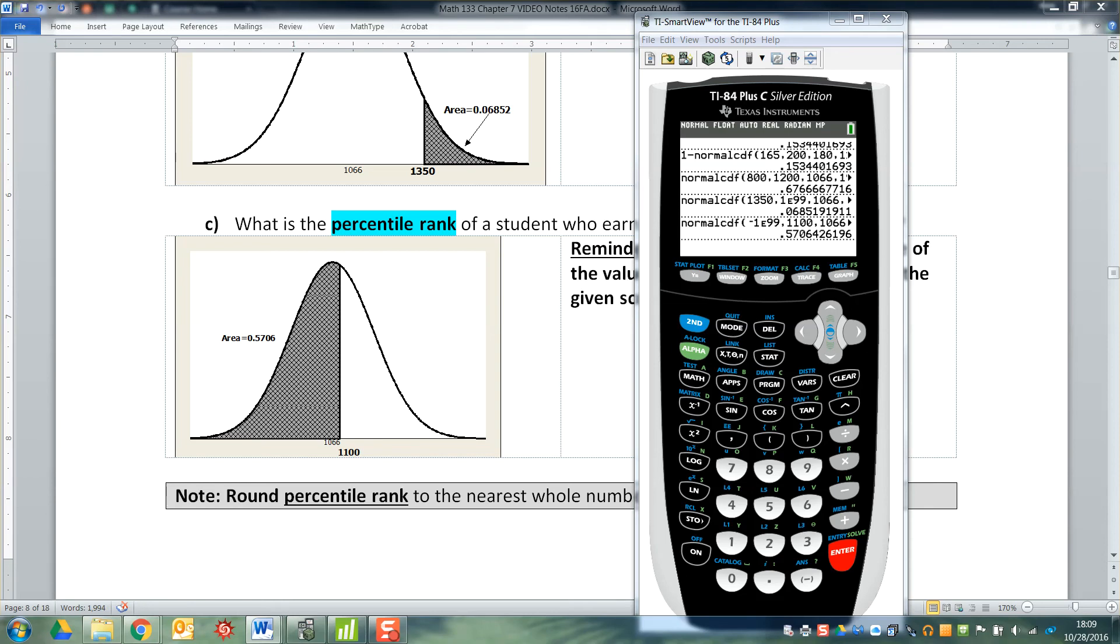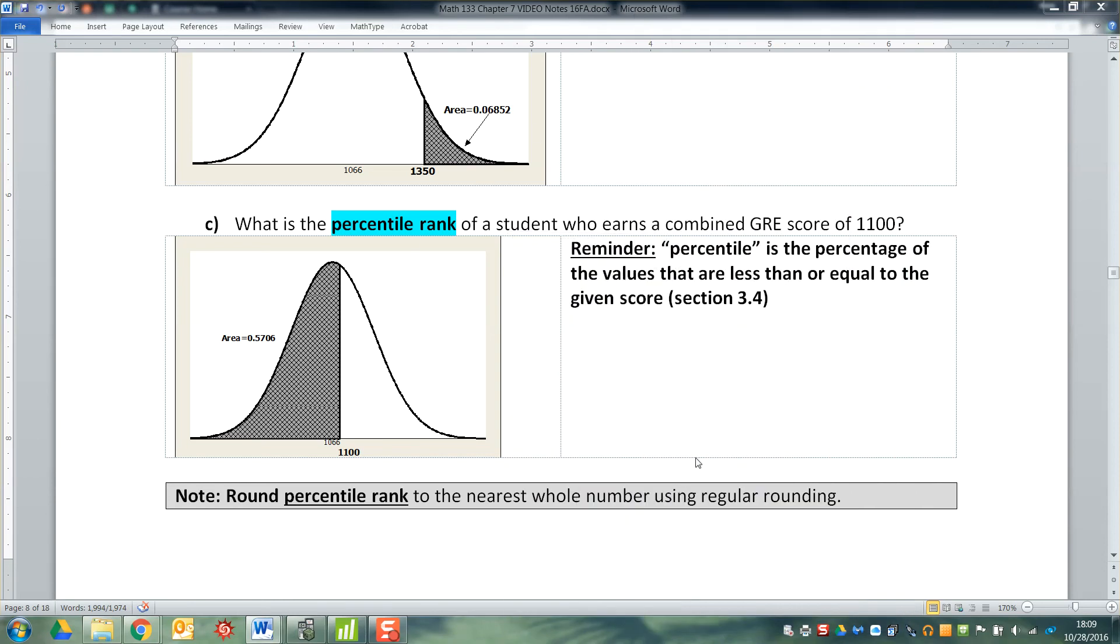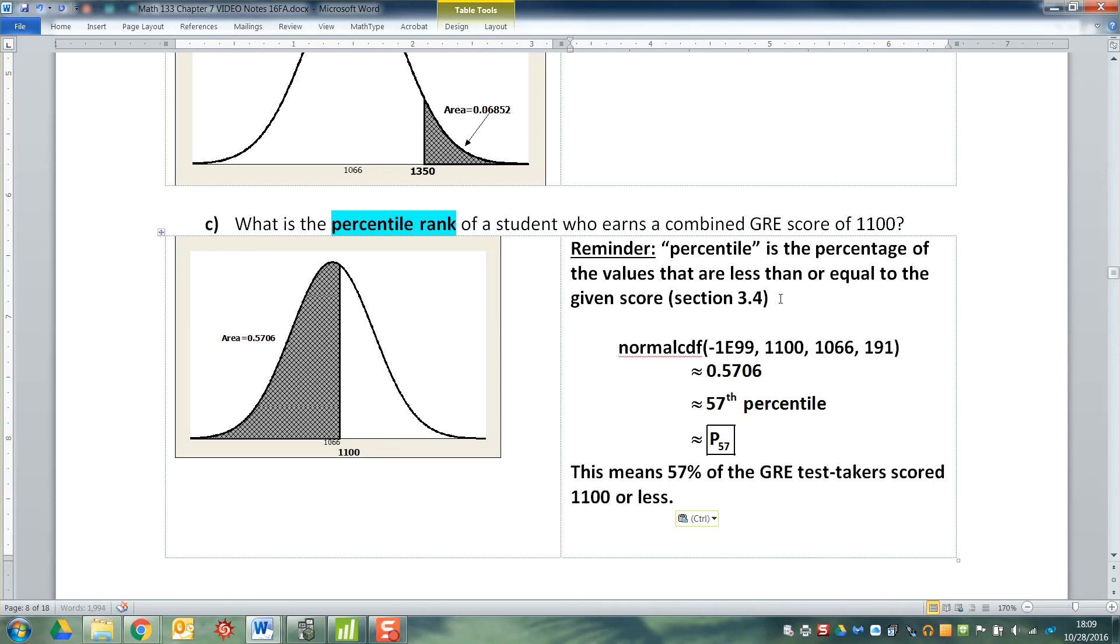And I get that value that I said it was 0.5706. But if you look at the bottom of the page, what it says is that for percentile ranks, we don't really have a 57.06 percentile. So we actually are going to round to the nearest number. So that would mean I would round to the 57th percentile, which means 57% of GRE test takers scored 1100 or less.